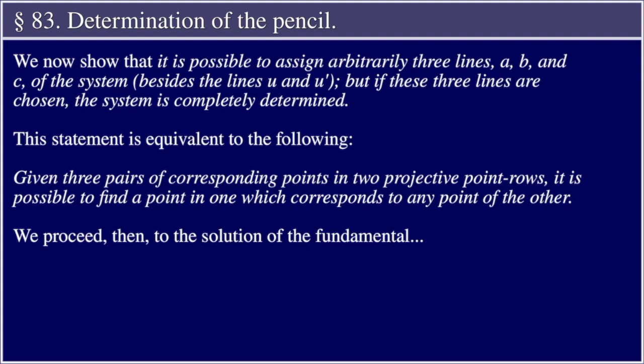Section 83: Determination of the Pencil. We now show that it is possible to assign arbitrarily three lines A, B, and C of the system, besides the lines u and u', but if these three lines are chosen, the system is completely determined. This statement is equivalent to the following: Given three pairs of corresponding points in two projective point rows, it is possible to find a point in one which corresponds to any point of the other.